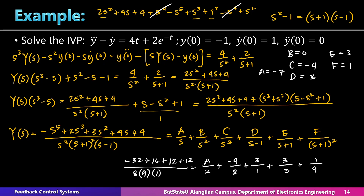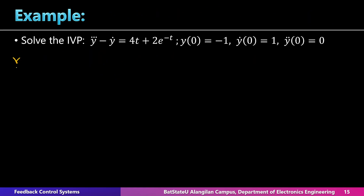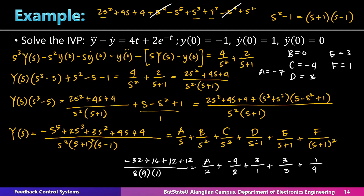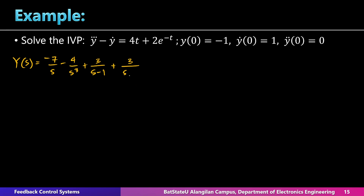We can now write Y(s) as a sum of partial fractions: Y(s) = −7/s + 0/s² − 4/s³ + 3/(s−1) + 3/(s+1) + 1/(s+1)². The next step is to take the inverse Laplace of Y(s) to obtain y(t), which is the solution of the differential equation.